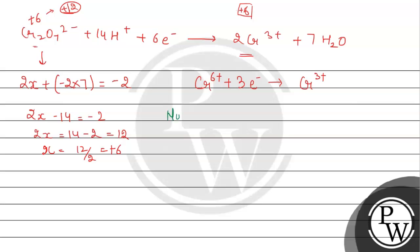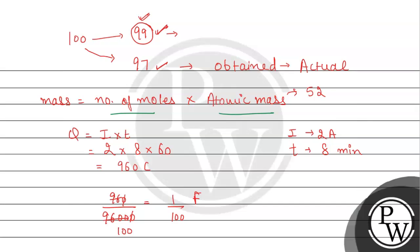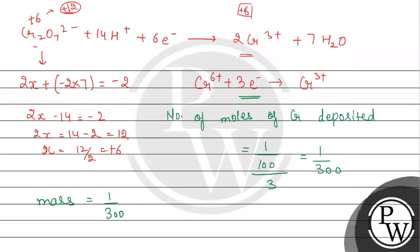Number of moles of chromium deposited: the charge we got is 1/100 faraday, divided by 3 electrons, gives 1/300 moles. Now we need to find mass. Mass = number of moles × atomic mass = (1/300) × 52 = 52/300 = 0.173 grams. So this was our theoretical yield.